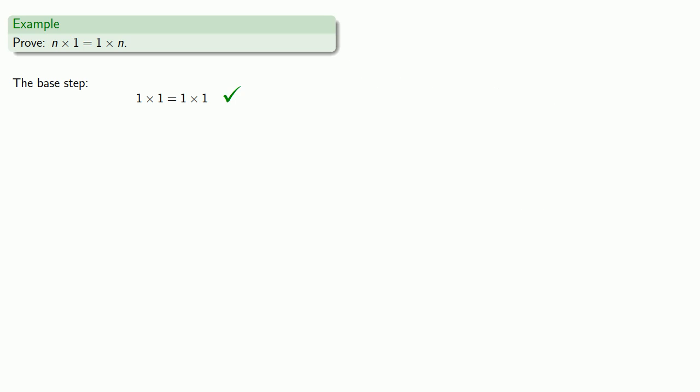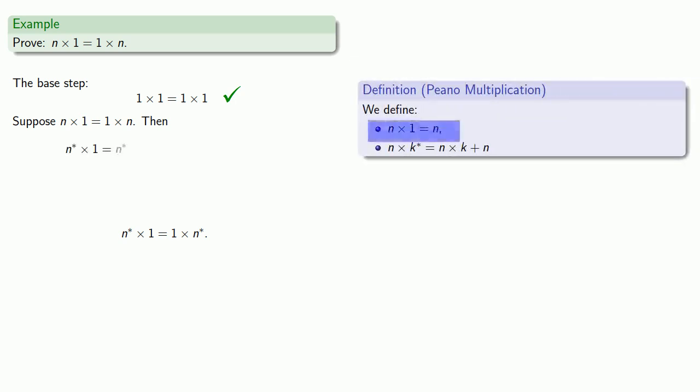Now, our induction step. Suppose our statement is true for n, we would like to show that it's true for n star. So let's consider n star times 1, our definition of multiplication tells us that that is n star.